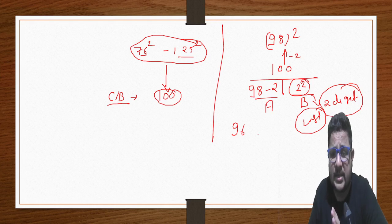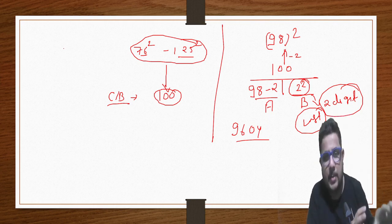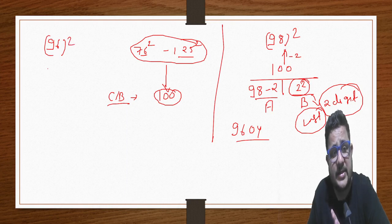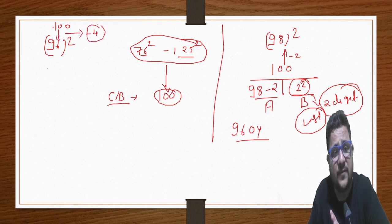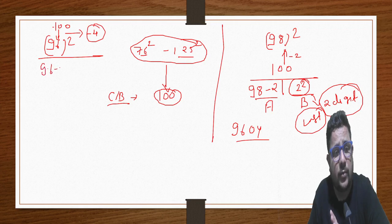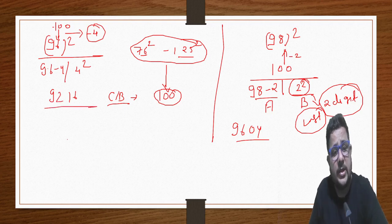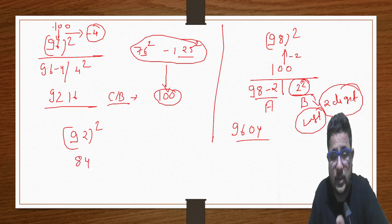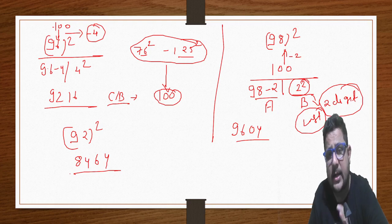The difference from 100 - if it's less, subtract it from the value whose square you're finding. If the difference is positive, add it; if minus, subtract it. Here 98 is minus, so subtract 2 from 98, giving 96. That's your part A. Part B is the square of 2, which is 4. But remember, part B is always 2 digits. You must always keep the last 2 digits there. So your answer is 96 and 04, which is 9604.